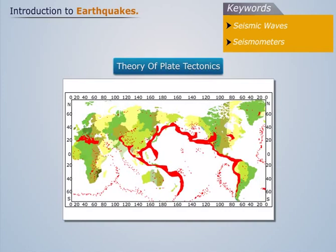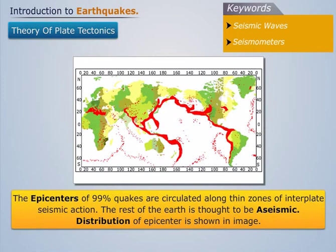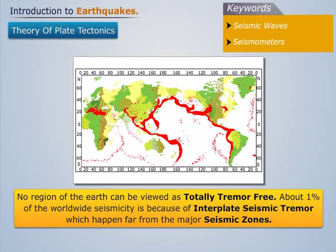Theory of Plate Tectonics: The epicenters of 99% of earthquakes are distributed along thin zones of interplate seismic activity. The rest of the Earth is thought to be aseismic, though no region can be viewed as totally tremor-free. About 1% of worldwide seismicity is due to intraplate seismic tremors, which occur far from the major seismic zones.